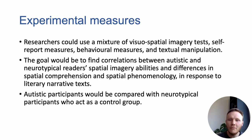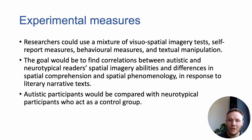So what kind of methods could be used to draw out findings about these particular questions? If we wanted to find out about the relationship between spatial comprehension and phenomenology, we could use a mixture of visuospatial imagery tests, self-report measures and behavioural measures alongside textual manipulation. The goal would be to find correlations between different readers' spatial imagery abilities and differences in comprehension and phenomenology in response to narrative texts.